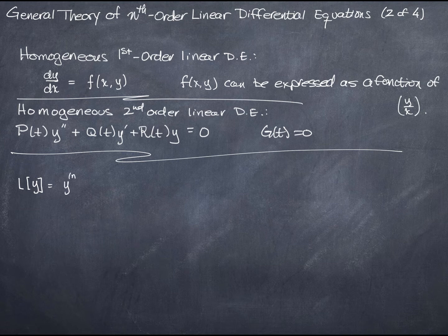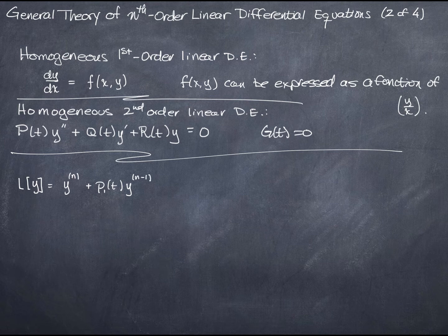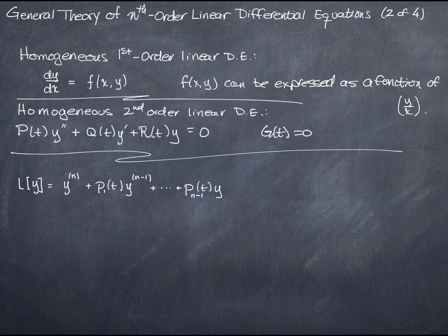So I get y — the nth derivative of y — plus some function of t times the n minus 1st derivative of y, plus P sub 2, and so on, down to P sub n minus 1 times the first derivative of y, plus the nth function of t times y, and that equals 0.